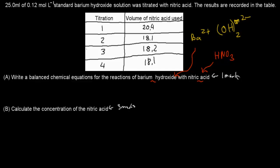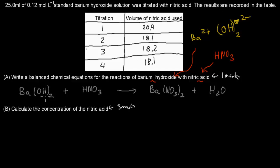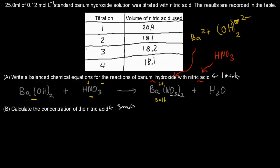Now knowing that, we can write our chemical equation: barium hydroxide plus nitric acid — our base and our acid coming together to form our salt, which is barium nitrate. We have 2 nitrates here because HNO₃ has H as +1, meaning NO₃⁻ is −1, and barium is +2, so we need 2 NO₃⁻ groups. We also get water as part of our neutralization reaction.